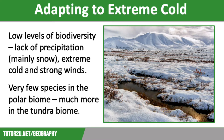Cold environments like the polar and tundra biomes have lower levels of biodiversity than most other global biomes. This is due to the lack of precipitation, which tends to fall as snow, and the extreme cold, which makes nutrient cycling difficult. Plants and animals have to make adaptations to be able to survive in such harsh conditions.